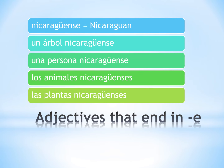Next, we have adjectives that end in E. With these adjectives, there are only two types: singular and plural. Gender is not a factor. Here we have some examples: un árbol nicaragüense, una persona nicaragüense, los animales nicaragüenses, las plantas nicaragüenses.